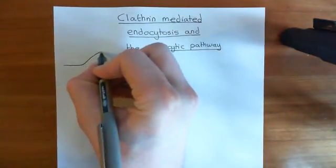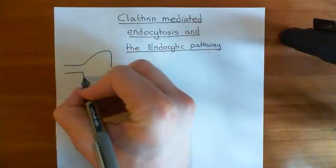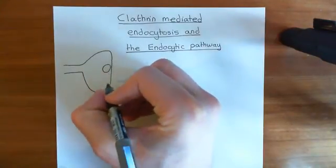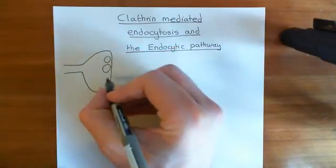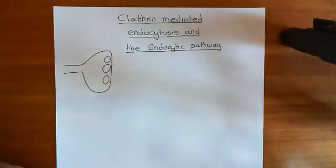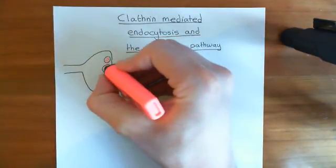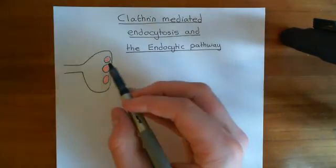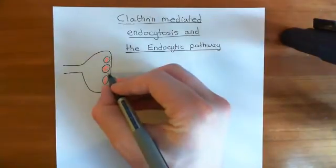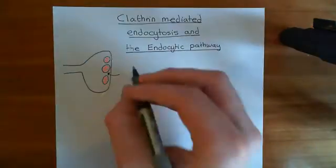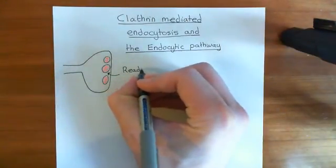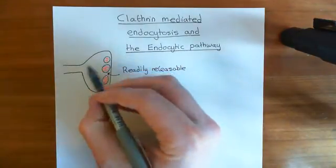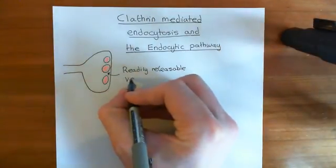The basic setup is that we have an axon terminal, and the axon terminal is continually exocytosing synaptic vesicles. We have a bunch of synaptic vesicles docked at the presynaptic membrane, full of neurotransmitters. Every time an action potential comes down the axon and arrives at the axon terminal, it triggers the exocytosis of these docked vesicles. These are known as the readily releasable vesicle pool because they are released very quickly in response to an action potential.